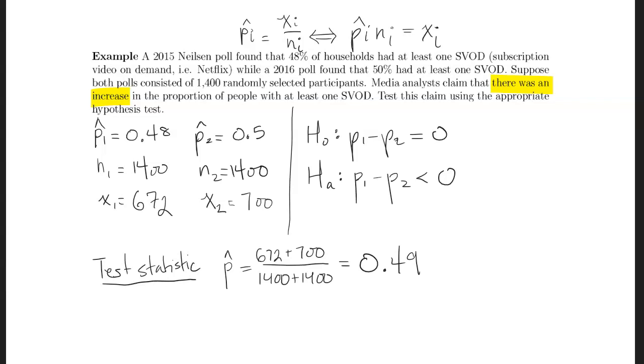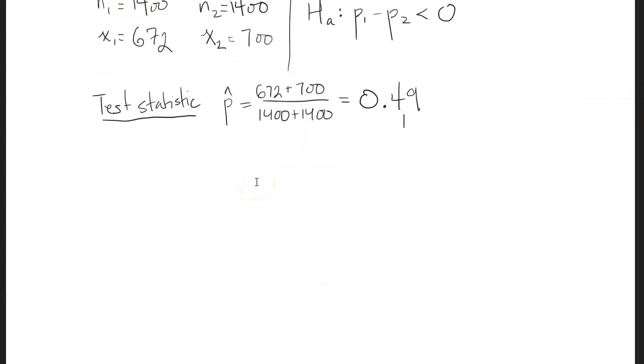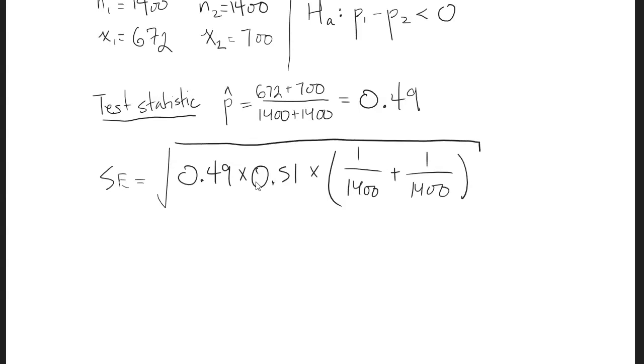If you think about it, if one of your proportions is 0.48 and the other is 0.5, and they both have the same sample sizes, then P hat should be their actual average. Then we're going to take the standard error, which is the square root of P hat times 1 minus P hat, so that's 0.49 times 0.51 times the sum of 1 over both sample sizes, all under a square root. And that is 0.0189.